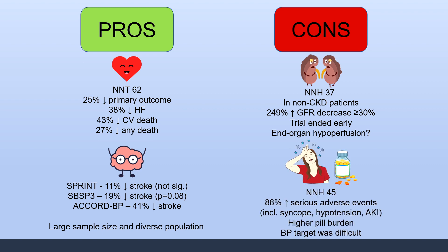Furthermore, the number needed to harm for overall serious adverse events was 45, with an 88% increase in events including syncope, hypotension, and AKI. The patients in the intensive therapy group also had a higher pill burden, which is associated with poor outcomes in the elderly. Additionally, achieving the blood pressure target was very difficult — the mean systolic in the intensive group was 121, meaning many patients couldn't reach below 120. Finally, with an average age of 68 and no patients under 50 enrolled, the generalizability of the SPRINT trial to younger populations is somewhat limited.